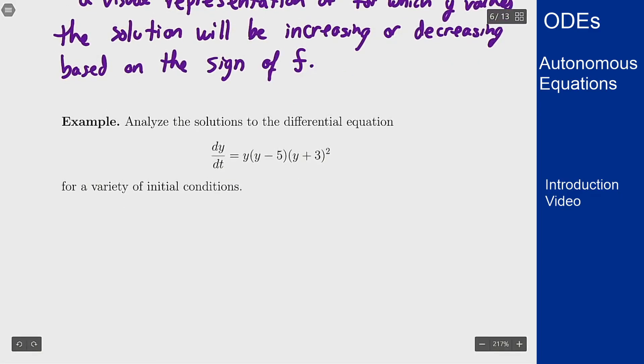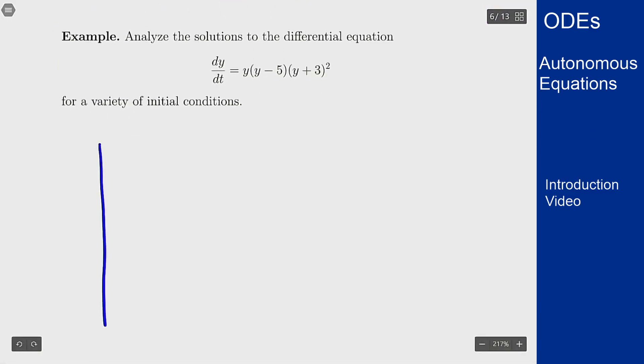So if we want to actually analyze this equation we first want to build a phase line and that involves finding all the equilibrium solutions which are all the places where this function on the right is zero and marking them on I like to use a vertical axis here and so I will mark zero I'll mark five and I'll mark minus three and I basically want to do a sign chart for this function on the right using this graph here.